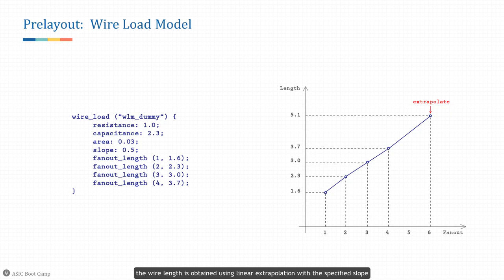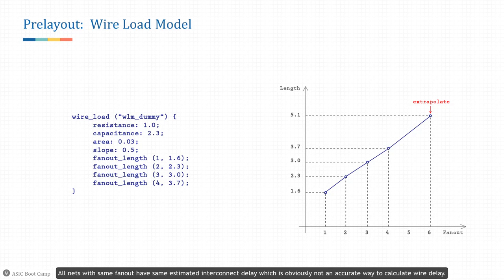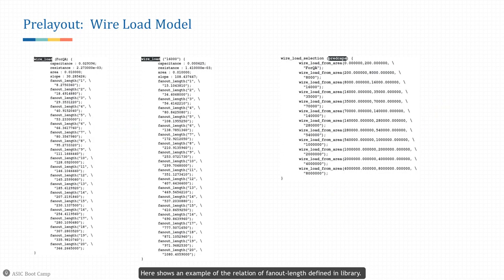The wire load model illustrates how the length of the wire can be described as a function of fan out. The model itself is essentially a lookup table for RC per unit length. For any fan-out number not explicitly listed in the table, the wire length is obtained using linear extrapolation with the specified slope. Note that for nets with the same fan out, no matter how they are routed, they will get the same wire delay estimation — which is obviously not an accurate way to calculate wire delay.